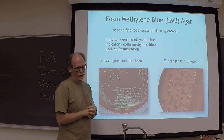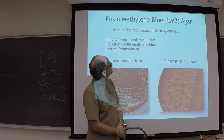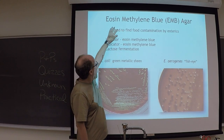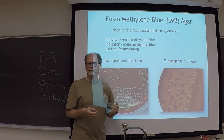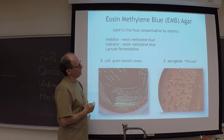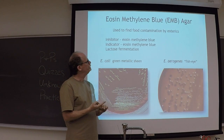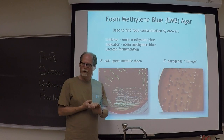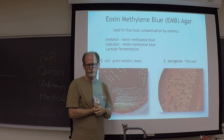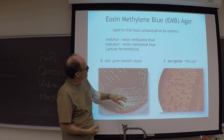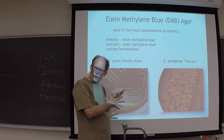Eosin-methylene blue agar, or EMB agar, is a petri dish as well. The purpose is to find food contamination — for example, if E. coli is in lettuce, this helps you identify it. The inhibitor and the indicator are the same in this media: eosin-methylene blue. It will only grow enteric or gram-negative bacteria. Gram-positive bacteria like Staph epidermidis and Staph aureus will not grow on this plate.